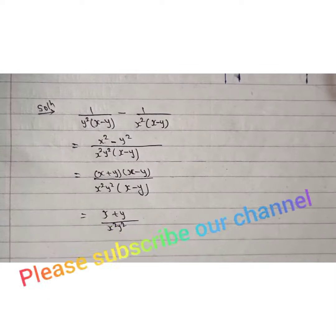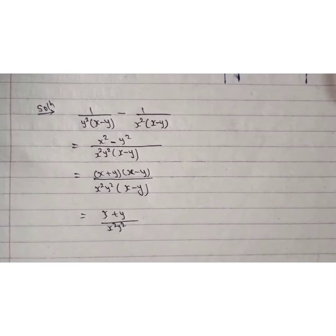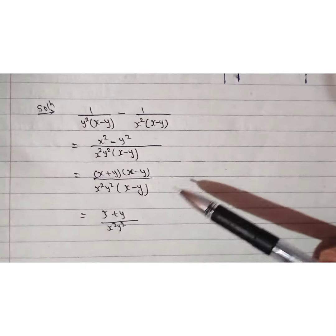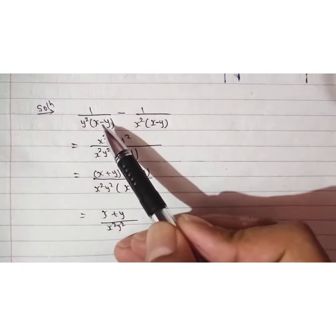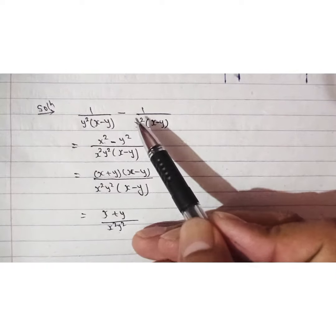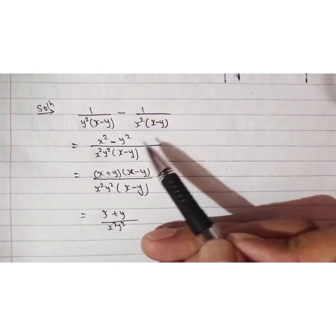Hello students, today I have a question from grade 9 algebra to simplify. You can see here this is the question: 1 over y²(x-y) and 1 over x²(x-y).